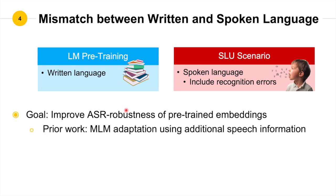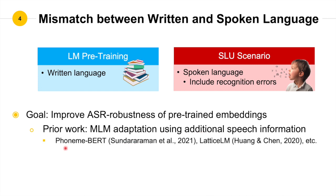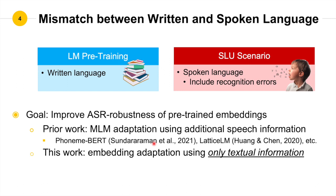Prior work has navigated this direction mainly by using additional speech information, such as phoneme sequences for PhonimBERT and lattice for Lattice LM. But the additional speech information is very difficult to collect at both training and serving time. Therefore, in this work, we propose a new adaptation method using only textual information.